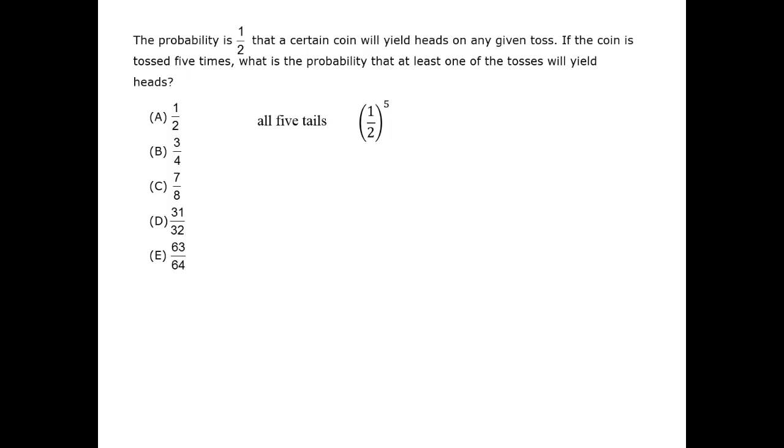Another way to look at it is that we are talking about getting a tails and another tails and so on. And 'and' as a word usually means multiplication in probability. Anyway, one-half to the fifth is one over thirty-two.